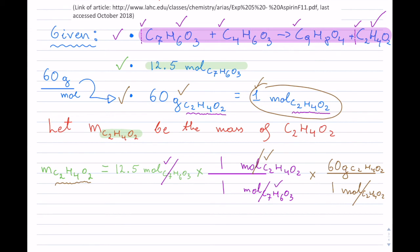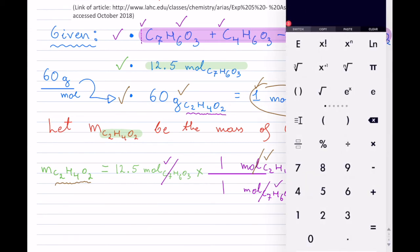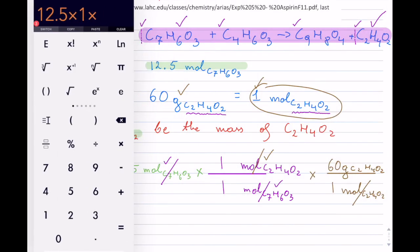So I have 12.5. So let me take out the calculator. I will do it all in one. So 12.5. So we are going to be multiplying everything on top. So times 1 and times 60. So that equals 750.